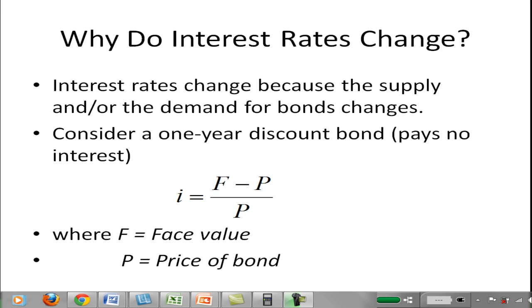How do you get interest? The interest that you receive is essentially the difference between the face value, the amount that the bond pays when it matures, and the price you paid for the bond.